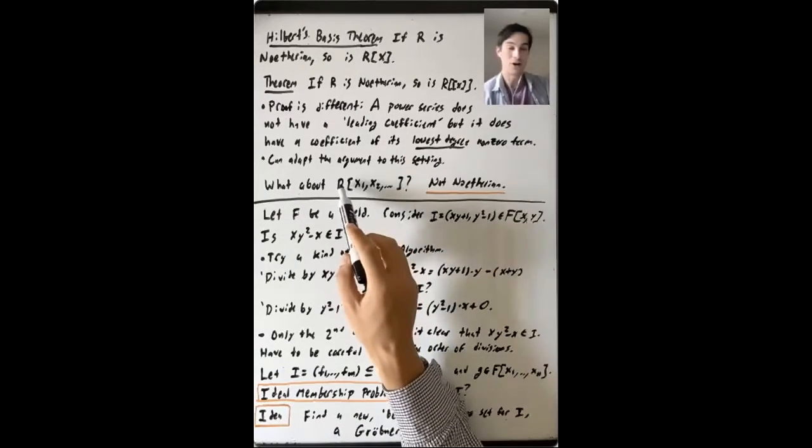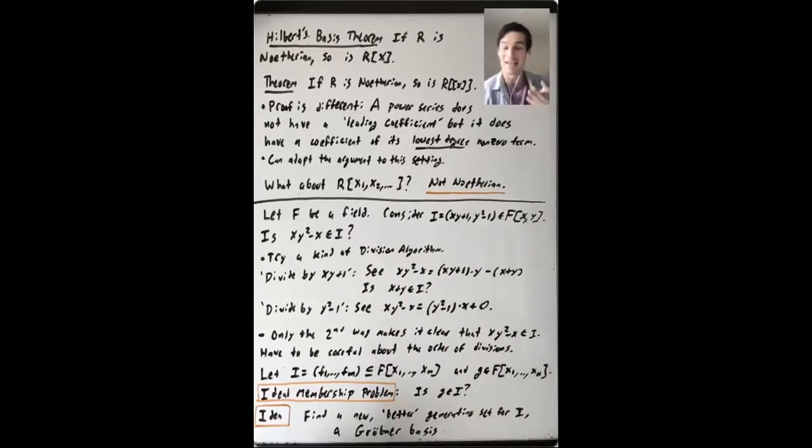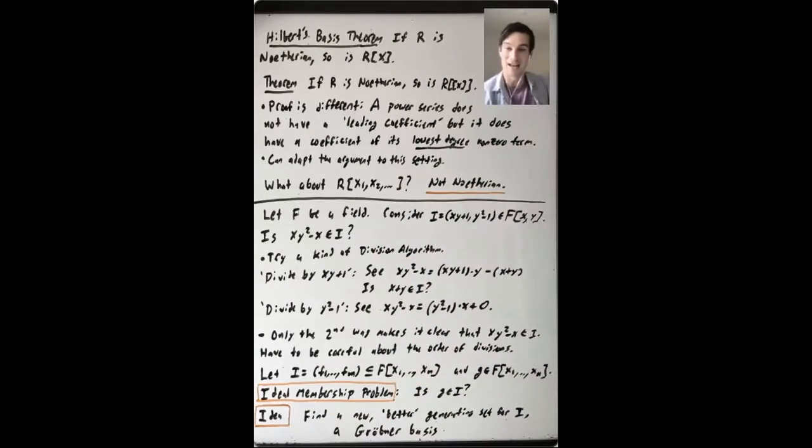So this polynomial ring in arbitrarily many variables is not Noetherian. And in fact, it is the one example that I keep around of like the main example, the easiest place to find an ideal that's not finitely generated.